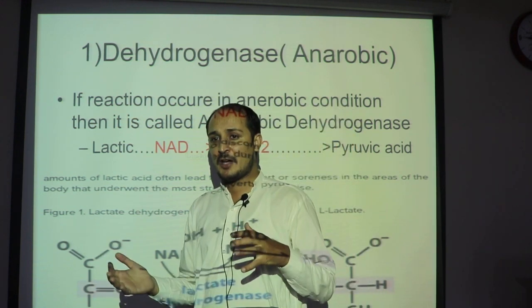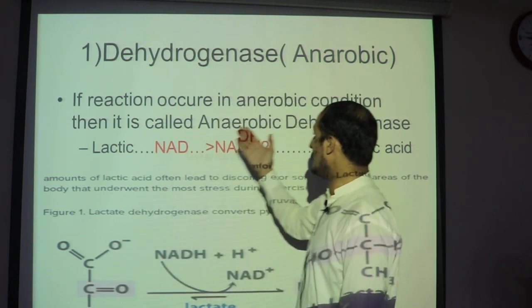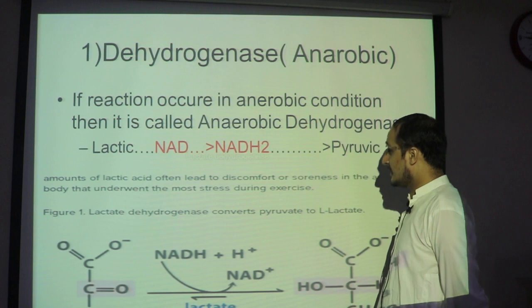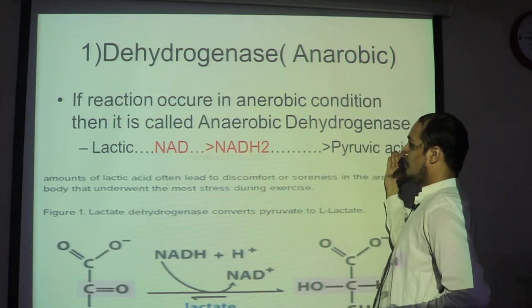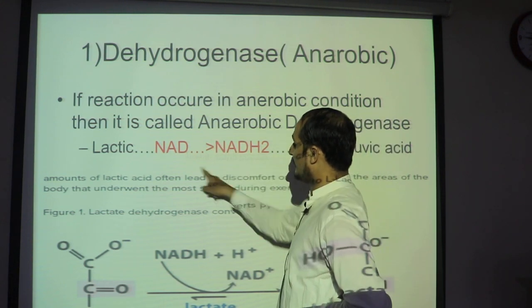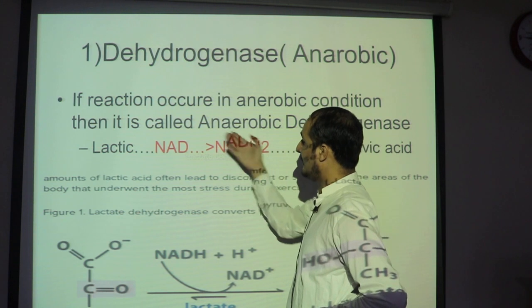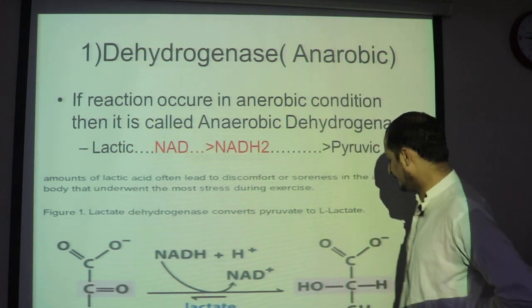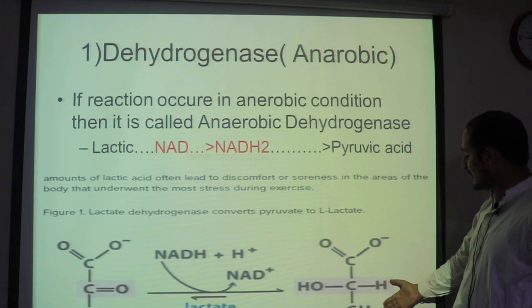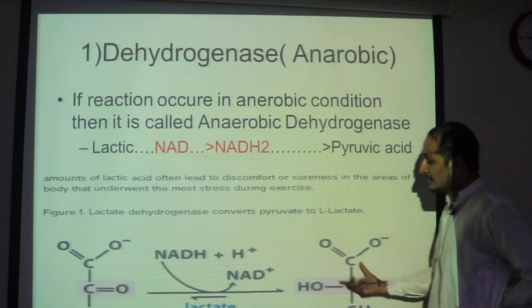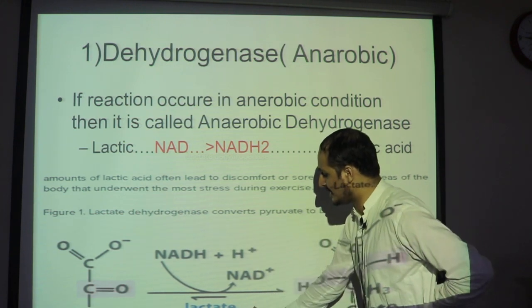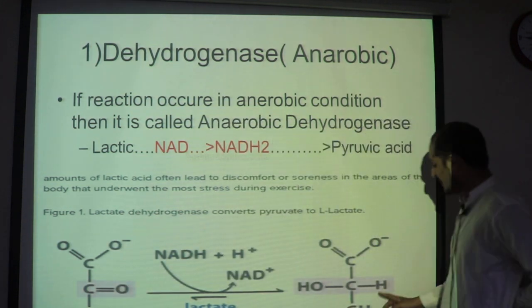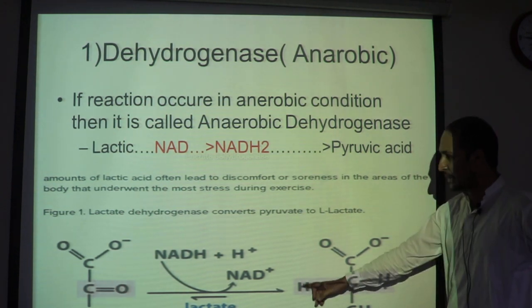In the absence of oxygen, as we studied in glycolysis, pyruvate is converted under anaerobic conditions. Lactic acid is converted to pyruvic acid by the action of lactate dehydrogenase enzyme. On the product side, hydrogen ions are present — this is the anaerobic type of dehydrogenase reaction.